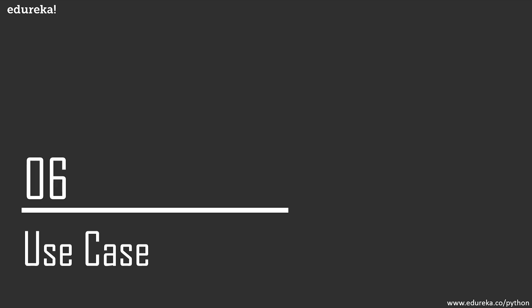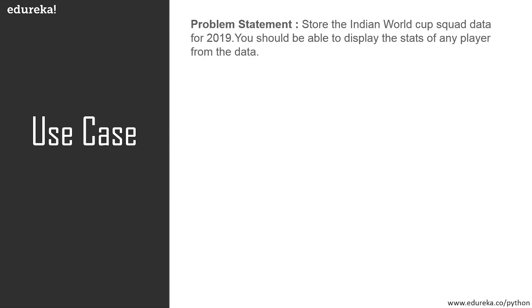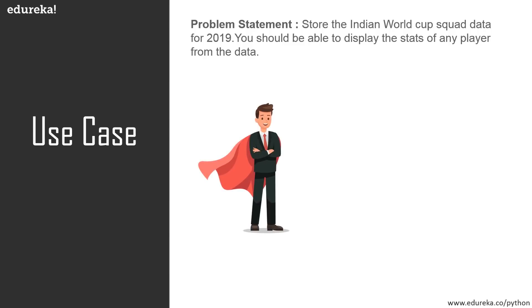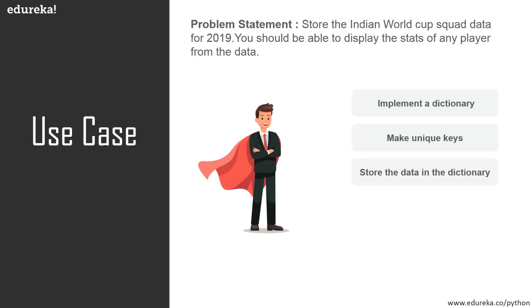Now that we have learned what a dictionary is, how to implement it, and all the operations we can perform, let's understand nested dictionaries. For this I have a problem statement: the ICC Cricket World Cup is just around the corner. We will implement a dictionary with the stats of 15 members from the Indian cricket squad for the 2019 World Cup using the concept of nested dictionary. We'll make unique keys to access values, store the data, import the pandas package, and convert it into a data frame for better display.